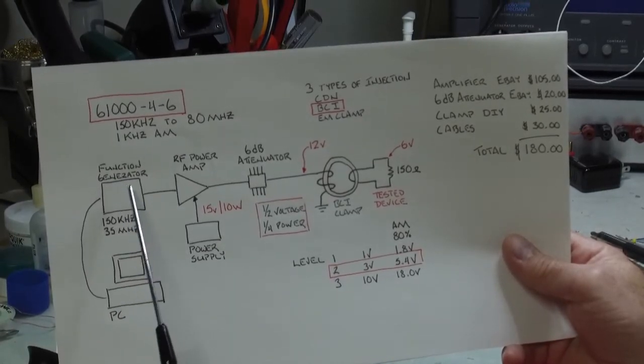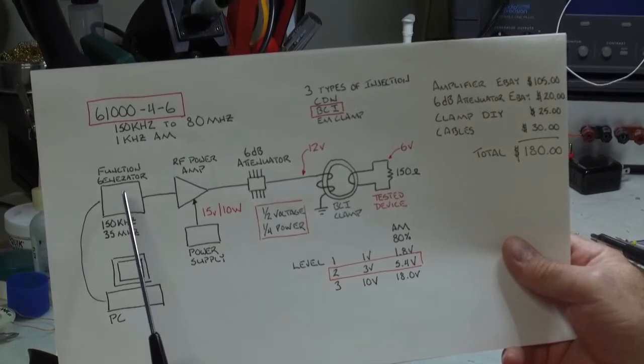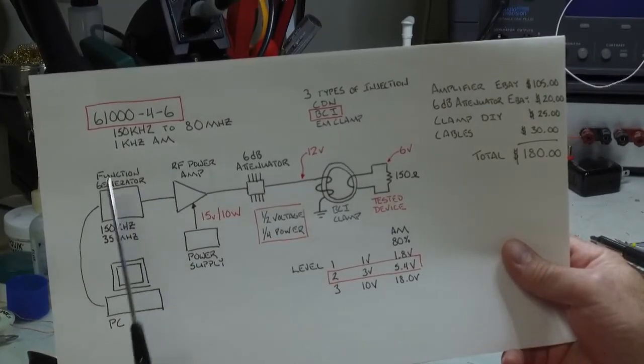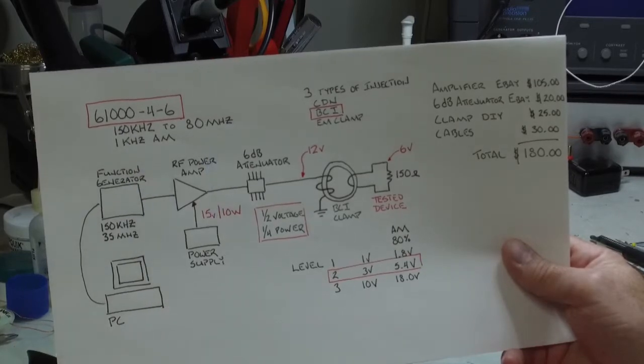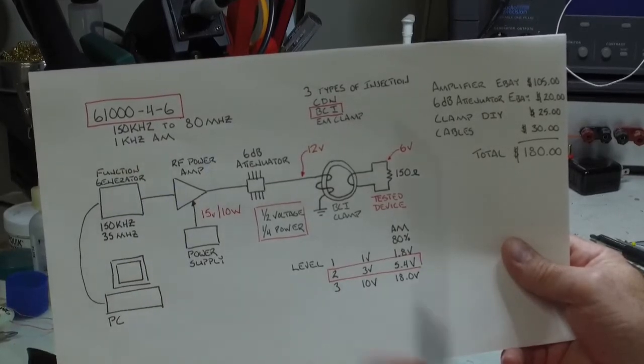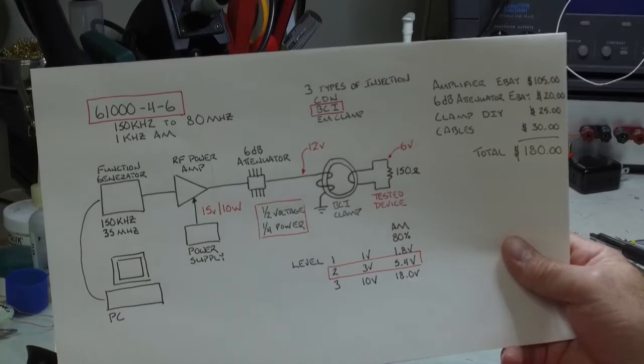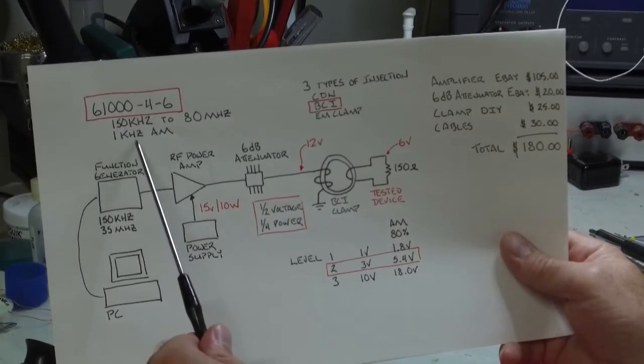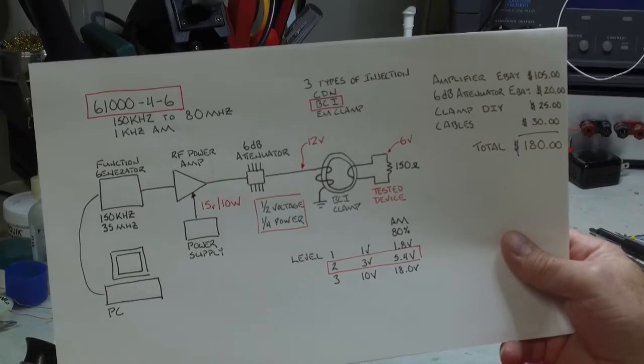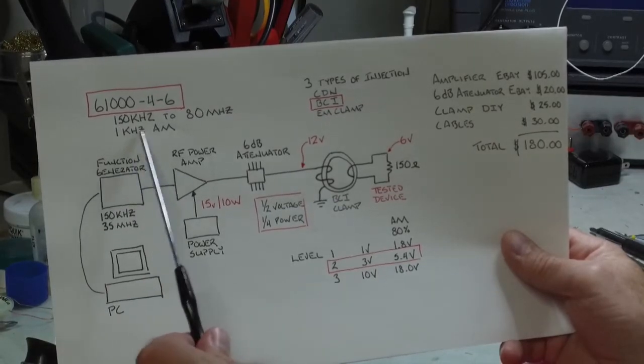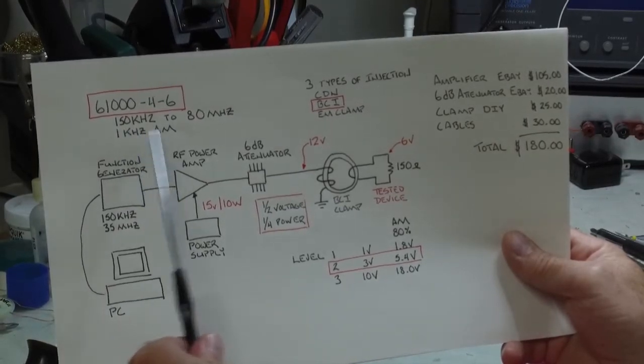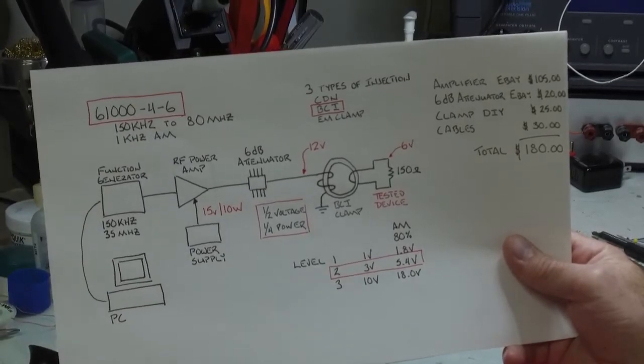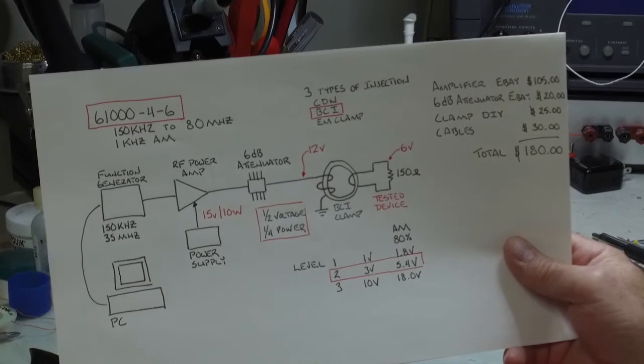I am using a Rigol power function generator, DG4102, and it is capable of doing this frequency range, and it is also capable of doing the modulation. However, it cannot sweep automatically at the same time as doing the amplitude modulation. So I'm going to set it up for modulation and then manually, via the knob, sweep the frequencies.